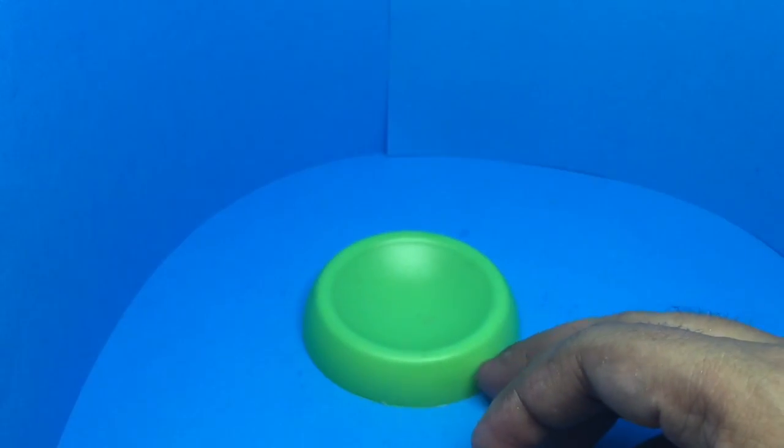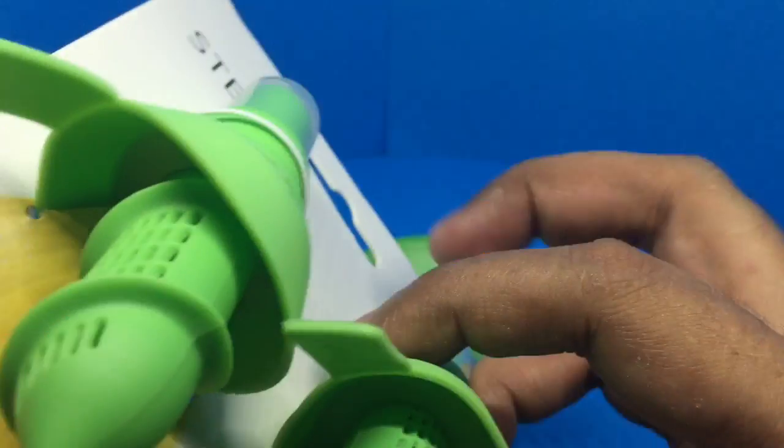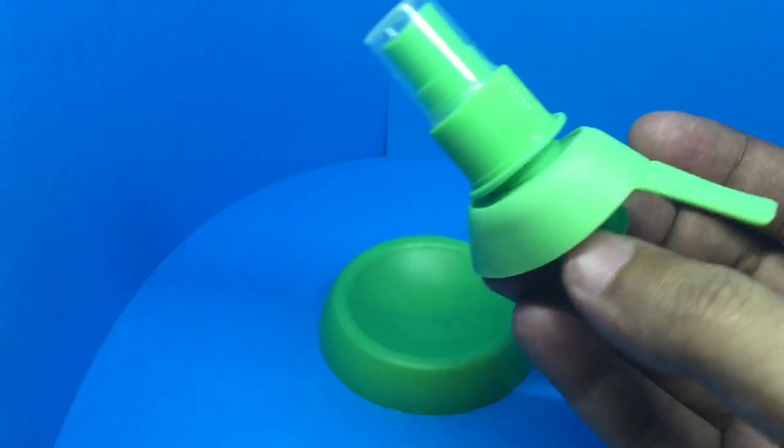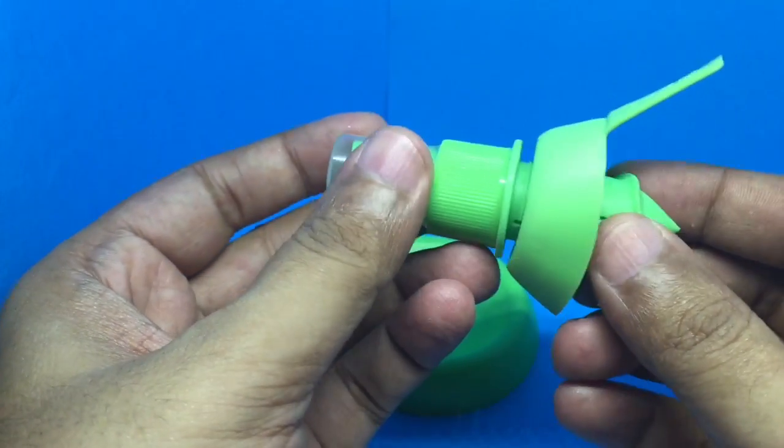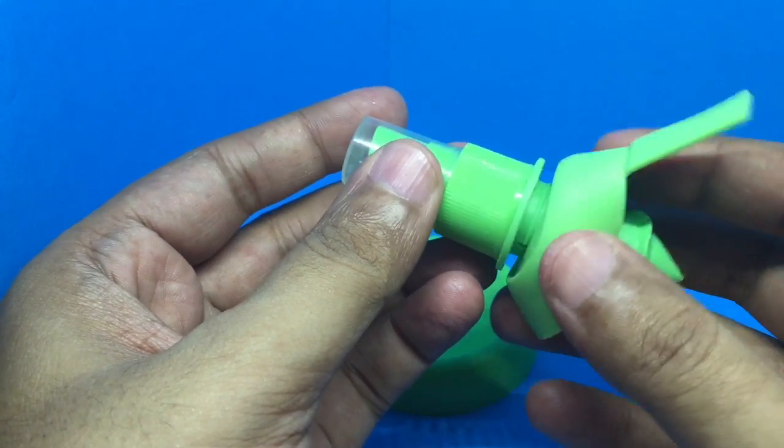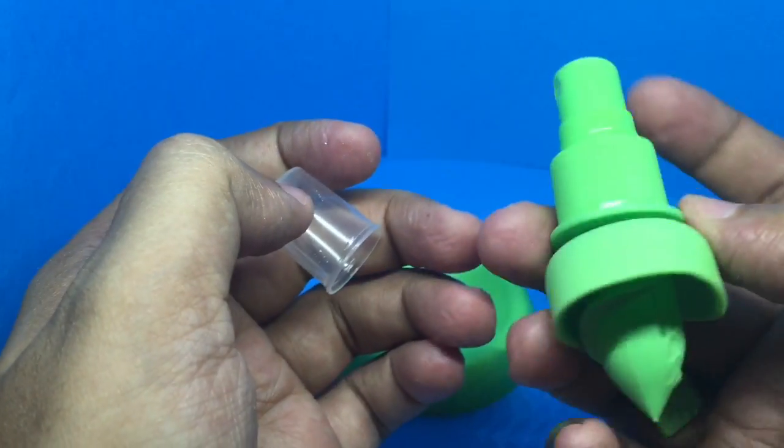You get this stand where you can put the lemon, and you also get this sprayer. Everything is made out of plastic; this is rubber. It even comes with a smaller lid for the top.